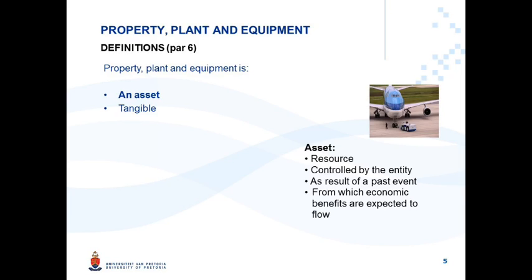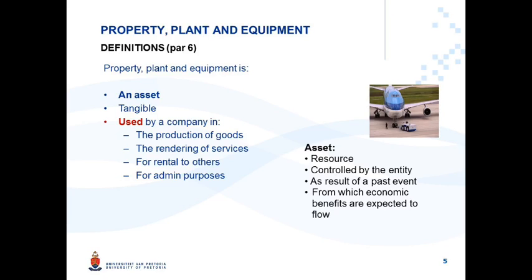Continuing with the definition of property, plant and equipment from IAS 16: first of all it must be tangible. Intangible assets have their own standard regulating their accounting treatment. Therefore, for something to be classified as property, plant and equipment it has to be tangible — you have to be able to see it and touch it. Further, property, plant and equipment is used by a company in either production of goods, rendering of services, for rental to others, or for administrative purposes, and it is used over more than one period.